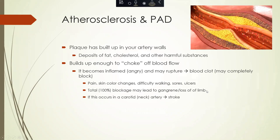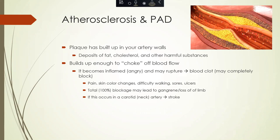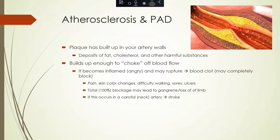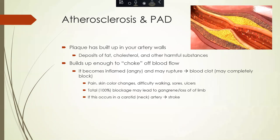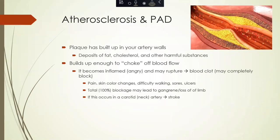The tie between atherosclerosis and peripheral arterial disease is mainly a plaque buildup in your artery walls. This plaque is a deposit of fat, cholesterol, and other harmful substances. If it builds up enough, it can often choke off or reduce the blood flow to that portion of the body.